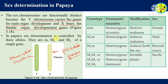In papaya, sex determination is controlled by three alleles: M, M1, and M2. The genotype with small m and small m — that is, the homozygous recessive condition — restricts maleness, so the plant becomes female.